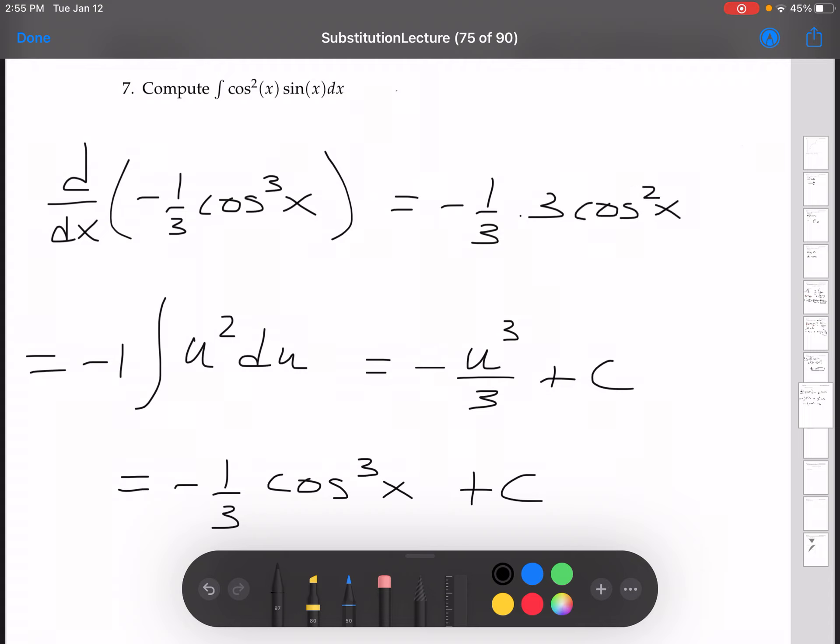Now, the derivative of cosine is negative sine. And so you see now that those 3s will cancel, and the 2 negatives will become a positive, and we get cosine squared x sine x, which is exactly that right there. So we know that this is our correct answer.